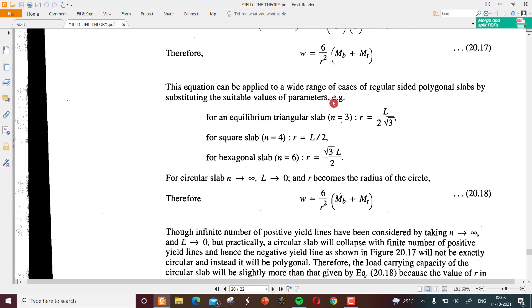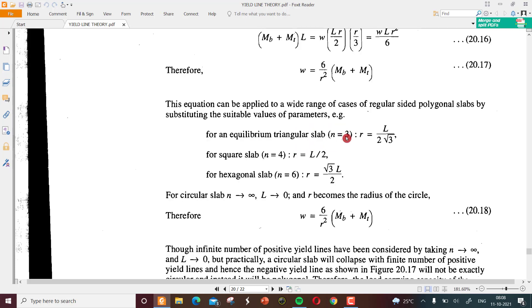This equation can be applied to a wide range of cases of regular sided polygonal slabs by substituting suitable values of parameters. For an equilateral triangular slab where n equals 3, where n is the number of sides, r will equal l by 2 root 3. For a square slab with n sides, r equals l by 2.